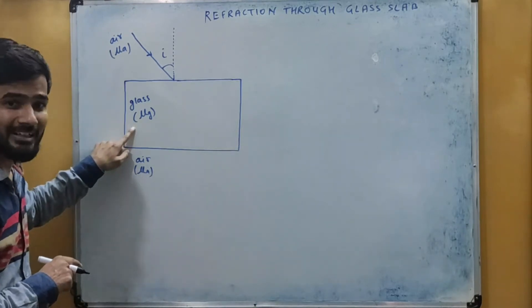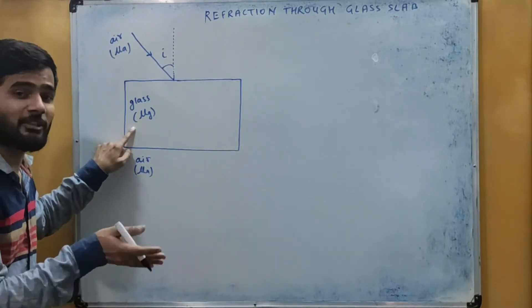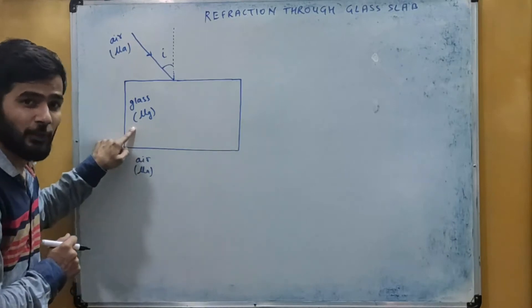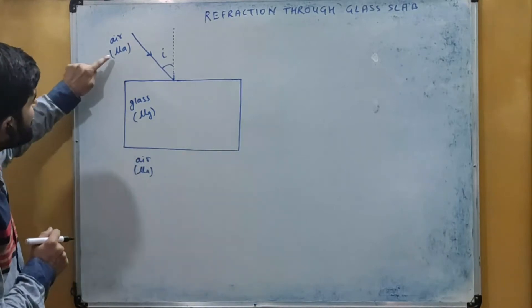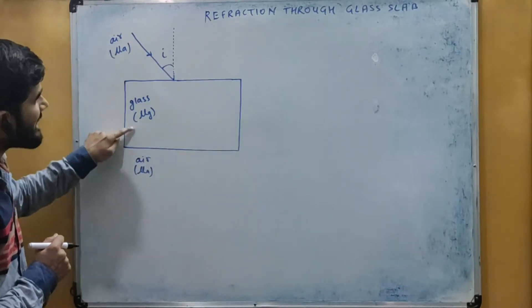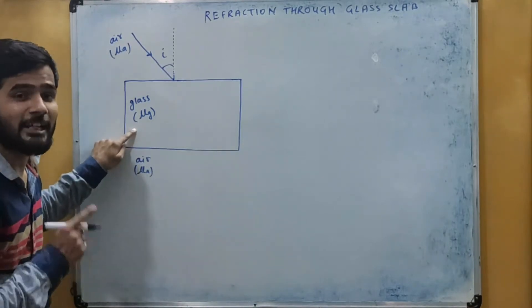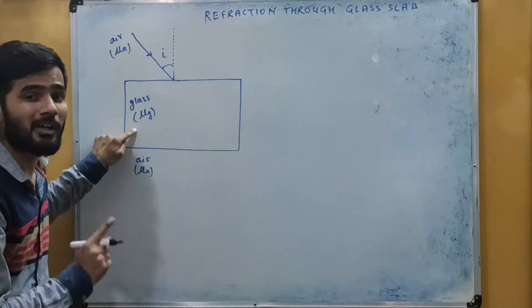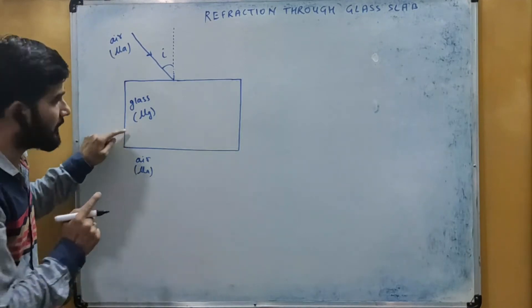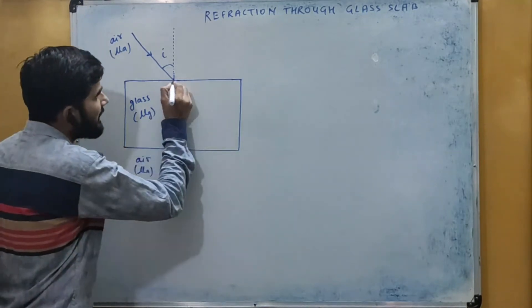Here we have glass — we have actually seen this in the previous video. Now when light passes from a rare to a denser medium, it bends towards the normal.